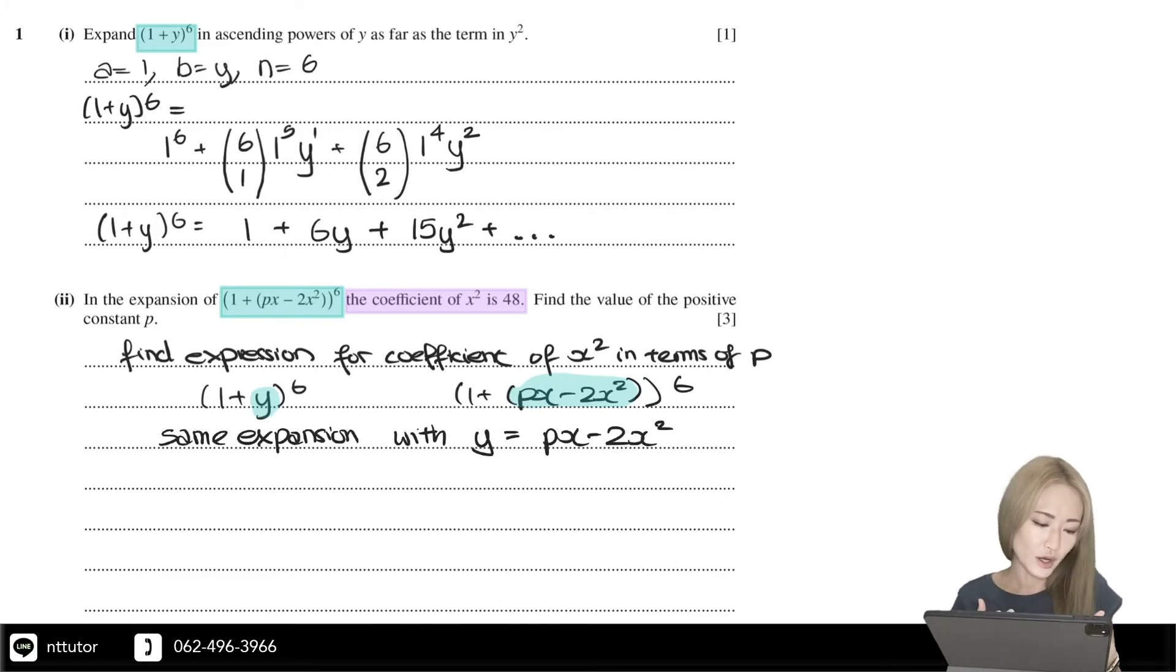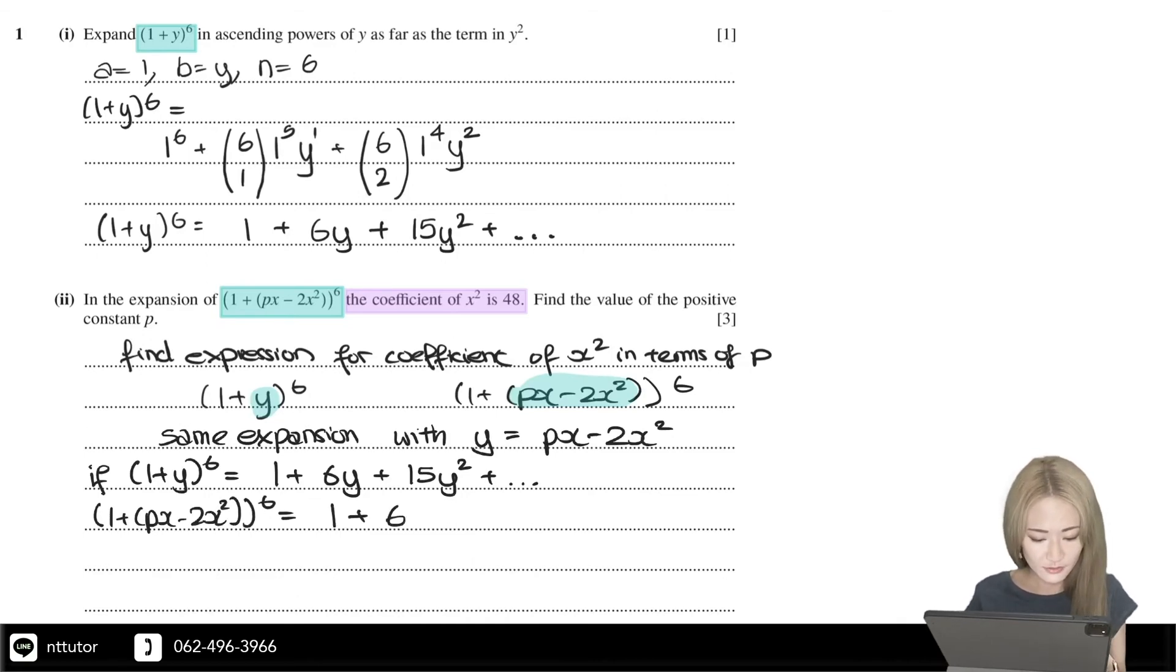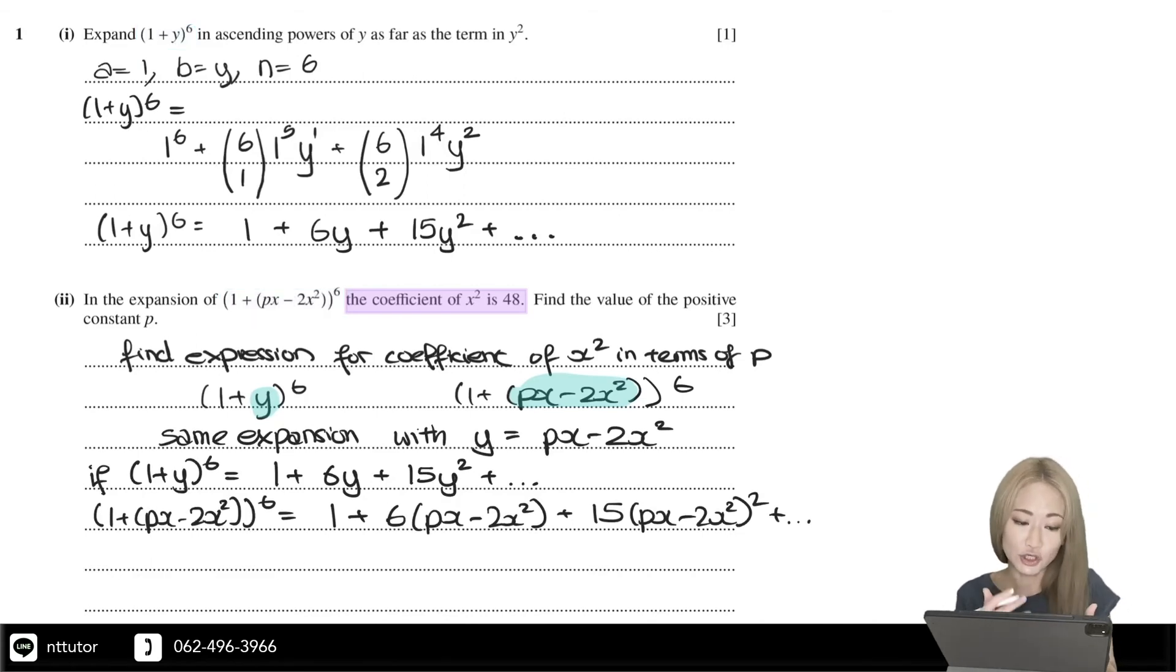From part 1, if (1+y)^6 equals 1 + 6y + 15y², then you can replace the y with px - 2x². If you do that, it becomes this, which is a lot easier to expand than expanding three terms in a bracket.